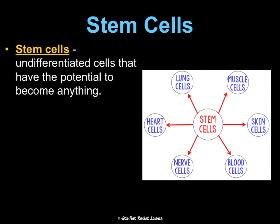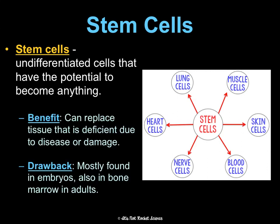Stem cells are undifferentiated cells that have the potential to become anything — they can become any type of cell. The benefit is that we could use them to replace tissue that's deficient or damaged due to disease. The drawback is the best stem cells, the least differentiated, are from embryos, while those in adult bone marrow are semi-differentiated, so they're not exactly easy to get.